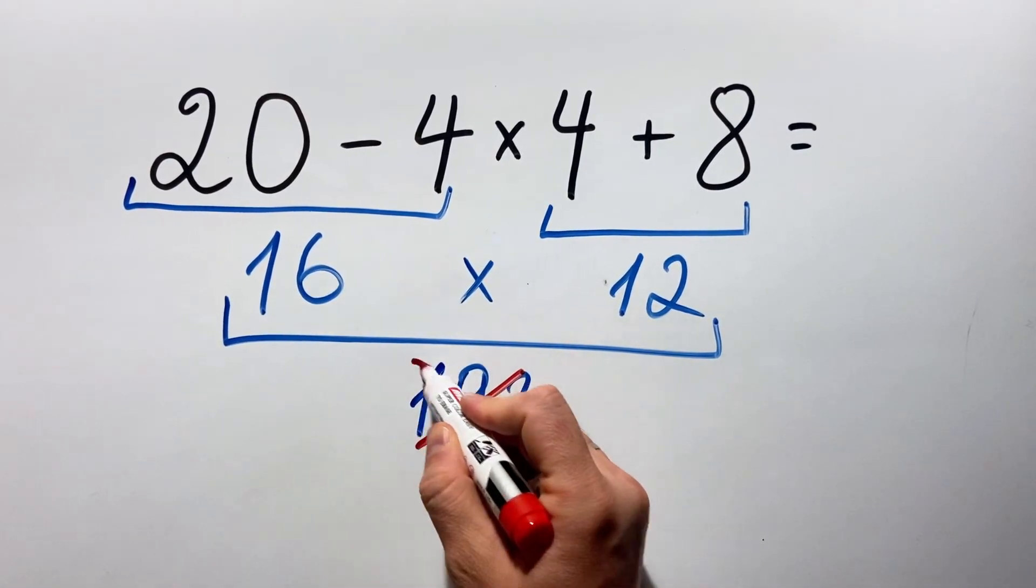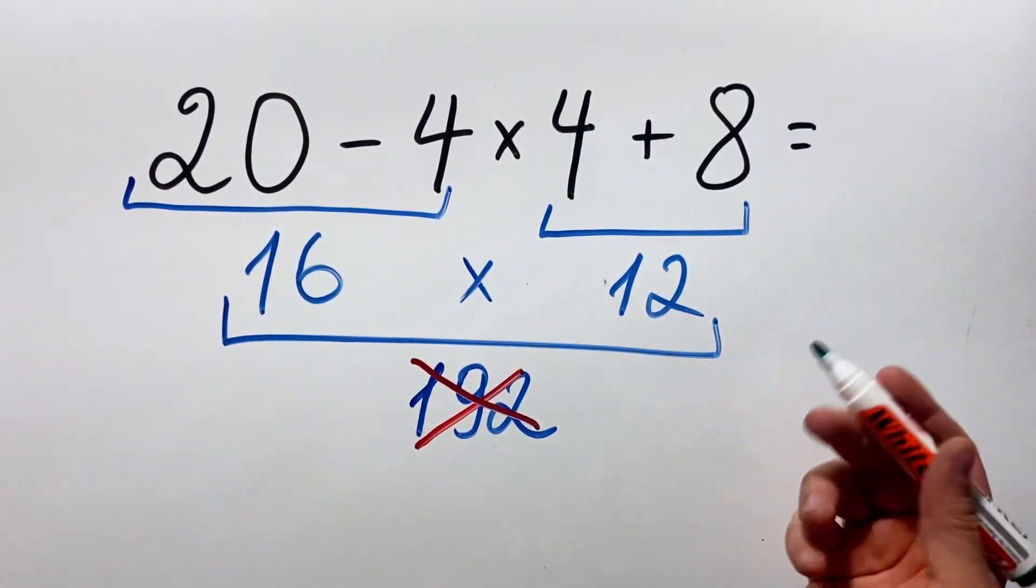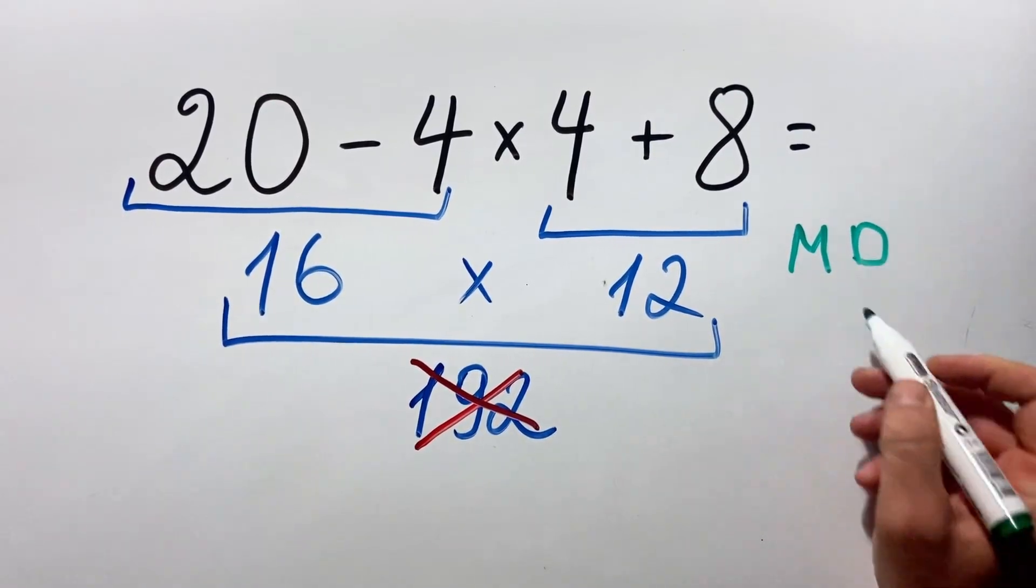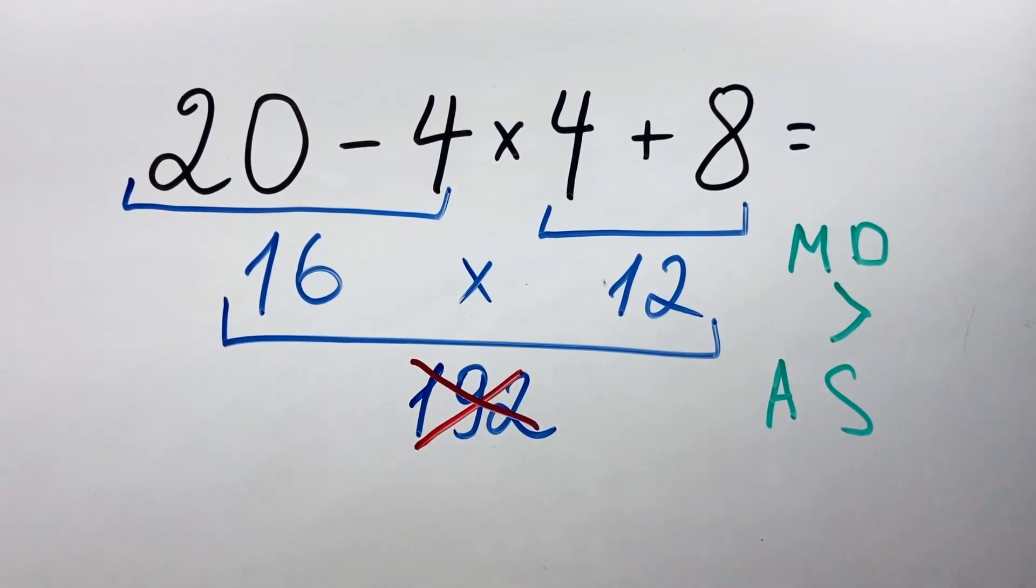But this answer, of course, is not correct. Why is this answer not correct? Because according to the order of operations, multiplication and division have higher priority over addition and subtraction.